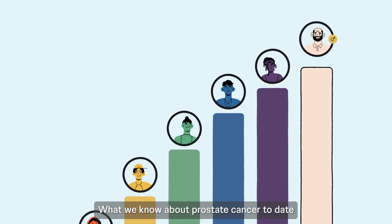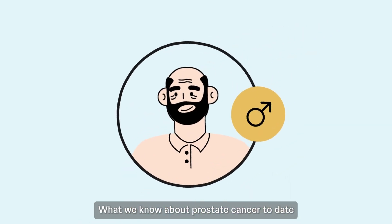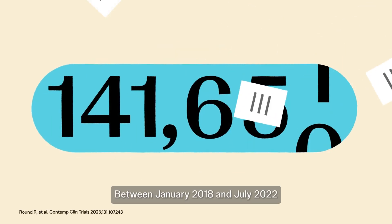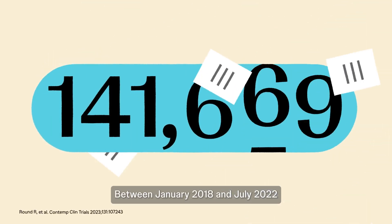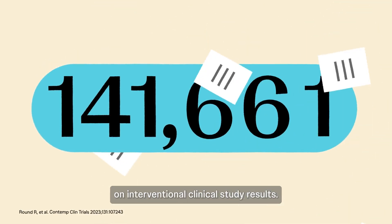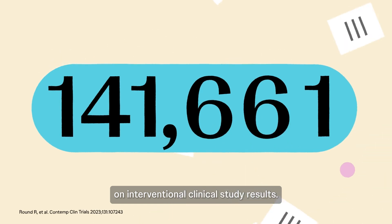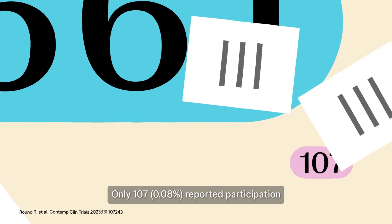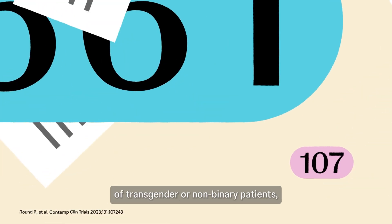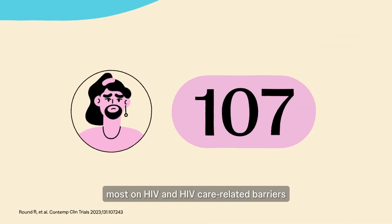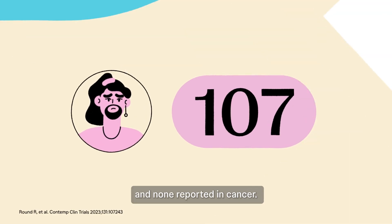As an example, what we know about prostate cancer to date is almost exclusively based on cisgender men. Between January 2018 and July 2022, there were 141,661 publications on interventional clinical study results. Only 107 — 0.08% — reported participation of transgender or non-binary patients, most on HIV and HIV care-related barriers, and none reported in cancer.